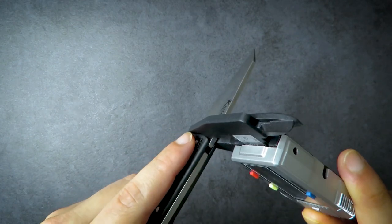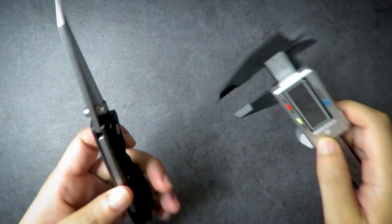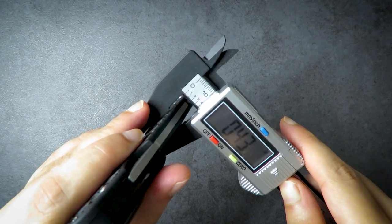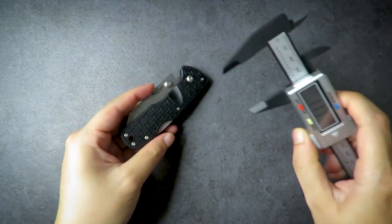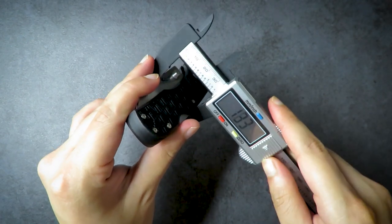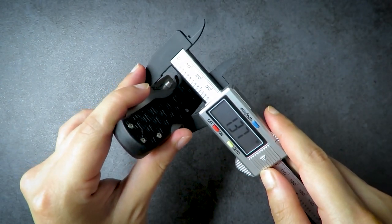We have a blade thickness of right around 0.11 inches or so. Let's see if you can get a better reading here. No, you can't squeeze it because of the thumb studs. We have a handle thickness of 0.43 inches, so a relatively thin knife all the way around. And then over here it comes in at about 1.37 inches.